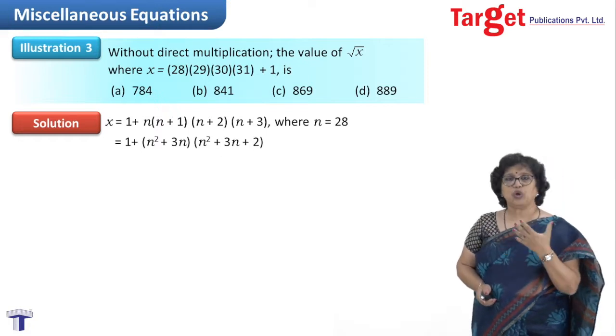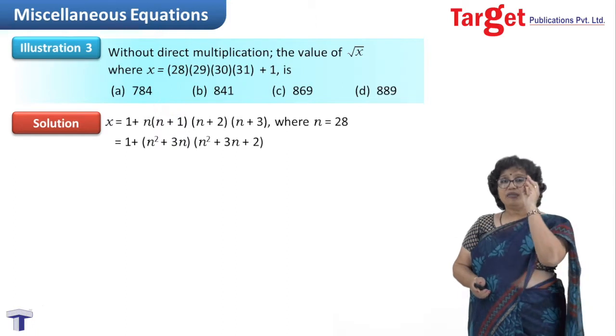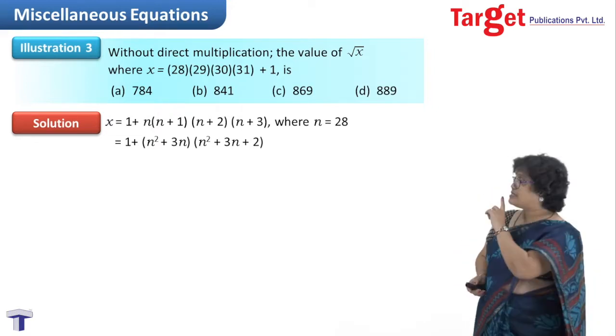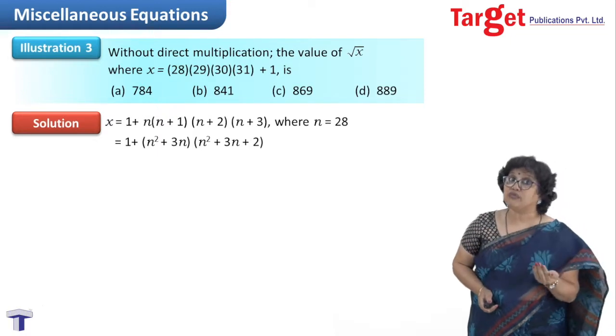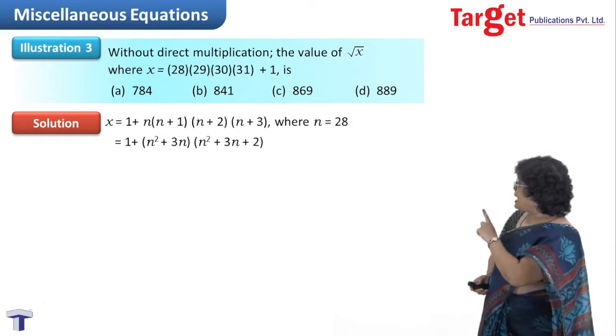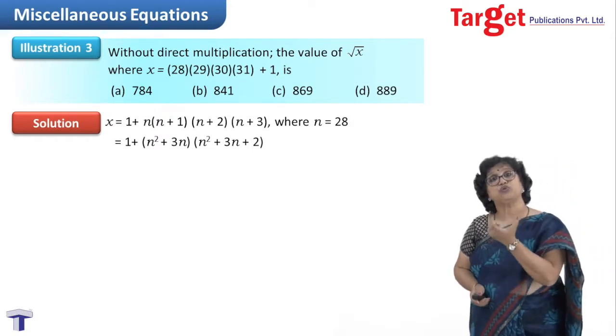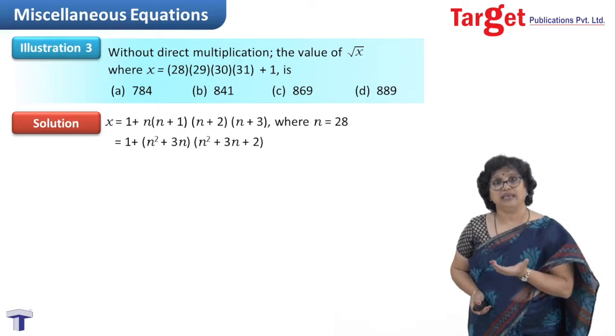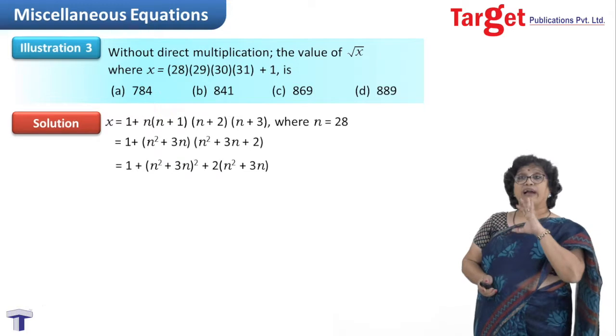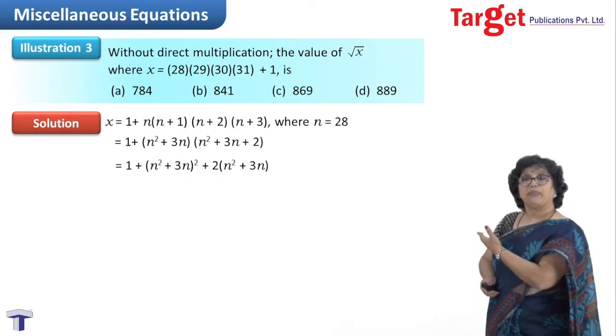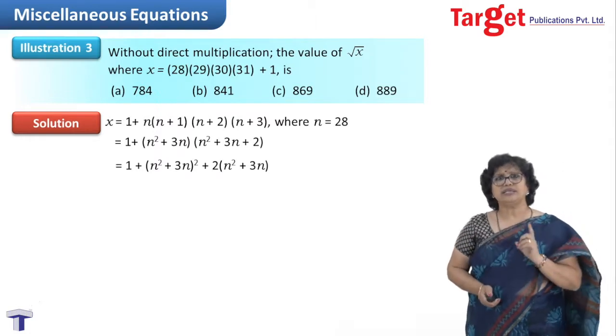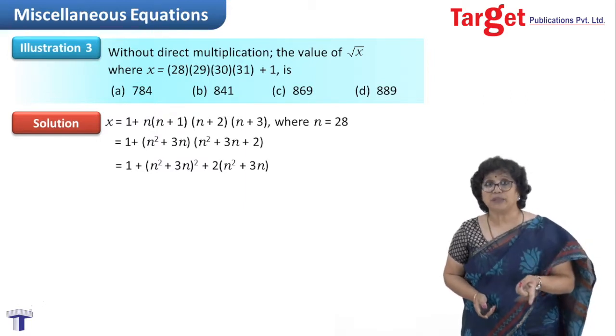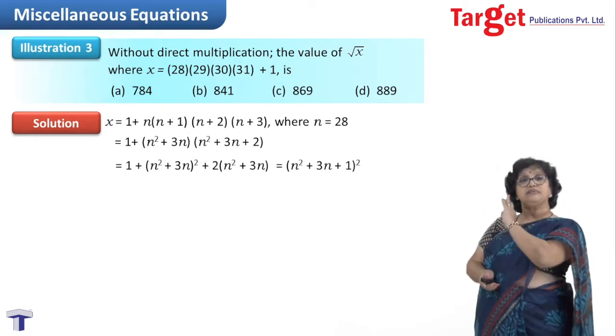When I see n(n+1)(n+2)(n+3), I should use presence of mind to determine which terms to club together. n(n+3) I club, giving n²+3n. And (n+1)(n+2) will also give n²+3n in the product. That's the idea. I multiply (n²+3n)(n²+3n+2). The expression for x becomes 1 + (n²+3n)² + 2(n²+3n). This looks like a²+2a+1, which is (a+1)². So the answer for x is (n²+3n+1)².